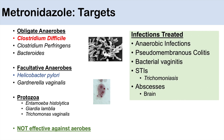The infections that metronidazole can be used to treat include anaerobic infections, pseudomembranous colitis caused by Clostridium difficile, bacterial vaginosis, and some STIs like trichomoniasis due to the protozoa Trichomonas vaginalis. It's also used for intra-abdominal abscesses, and a big one is brain abscesses because of its ability to cross the blood-brain barrier.